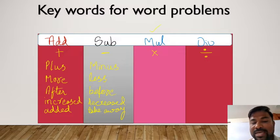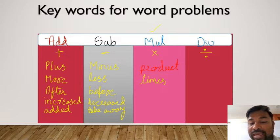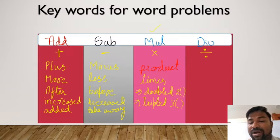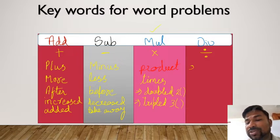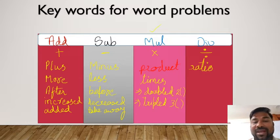For multiplication, the main keyword is 'product.' The next word is 'times.' If you come across the word 'double,' remember it means two times. If you come across 'triple,' it means three times. For division, the main word we come across is 'ratio.' These are the basic general keywords we use when dealing with word problems.